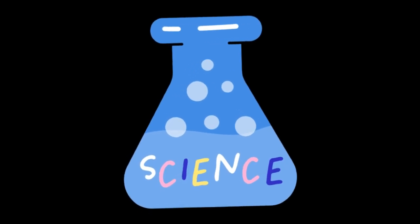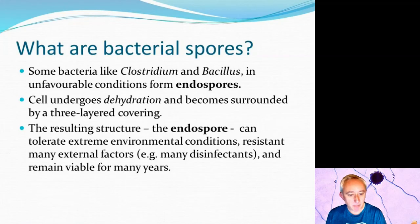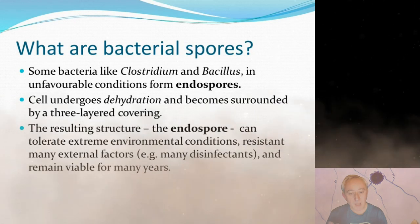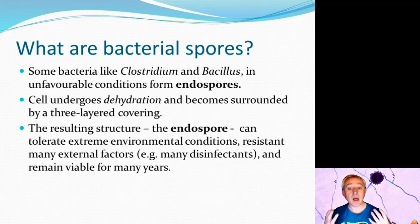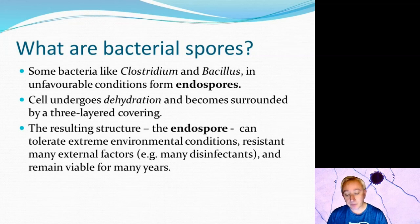We have bacterial and fungal spores, but even within these two different kingdoms there are challenges that spores present. We begin with bacterial endospores. Some bacteria, to address unfavorable conditions, form endospores, where a portion of the cytoplasm and a copy of the bacterial chromosome undergo a form of dehydration and become surrounded by what is typically a three-layered covering. This resulting structure, the endospore, can tolerate extreme environmental conditions.